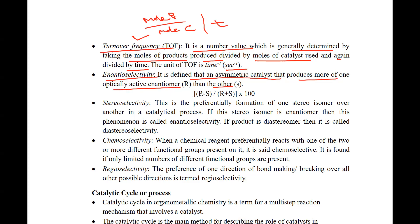The formula for enantioselectivity is: (R − S) / (R + S) × 100, where R means R product and S means S product. So with this formula we can calculate the enantioselectivity of a reaction.